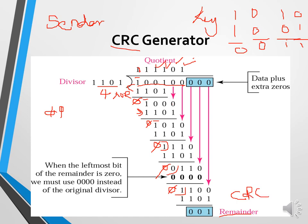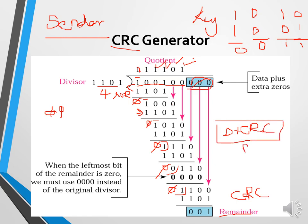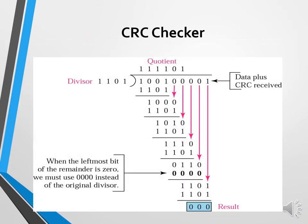Now the sender removes the three appended zeros from the data unit and replaces them with the CRC (001). The sender then adds the CRC to the data unit along with the predefined divisor and transmits it over the transmission medium to the receiver. What will happen at the receiver end? The receiver receives the data unit along with the CRC and the same divisor.